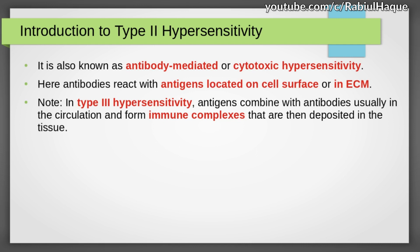That is the basic difference between type 2 and type 3 hypersensitivity. Both are mediated by antibodies. However, in type 2 hypersensitivity, antigens are located on cell surface or in extracellular matrix. In type 3 hypersensitivity, antigens were initially in the circulation, immune complexes formed and then deposited in the tissue. So always remember: type 2 is antibody mediated hypersensitivity and type 3 is immune complex mediated hypersensitivity. Now let's move on and talk about the various mechanisms of type 2 hypersensitivity.